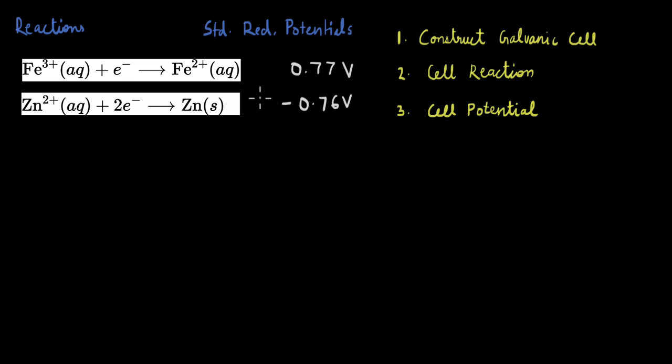Okay, so the first thing is, by looking at this information, we want to identify what is going to get oxidized and what is going to get reduced. For that, we use these standard reduction potentials. We know that higher this value, the more easy it is for reduction to take place.